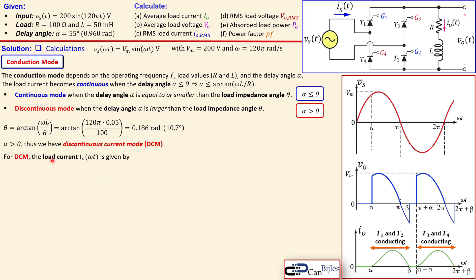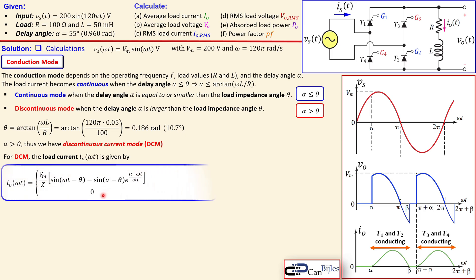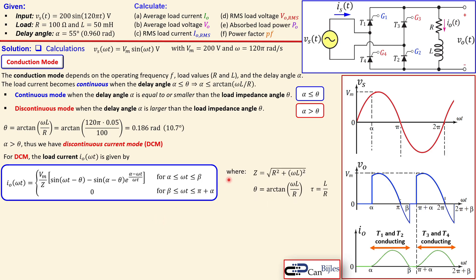For DCM operation, the load current expression is valid only between α and β, and is zero between β and π + α, repeating with a period of π. The impedance Z is the absolute value given by sqrt(R² + (ωL)²), and θ and the time constant τ = L/R are defined for this series RL load.